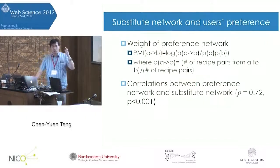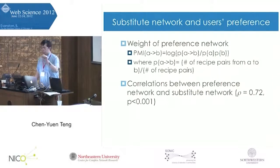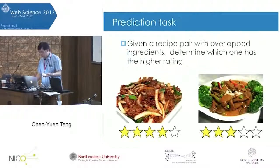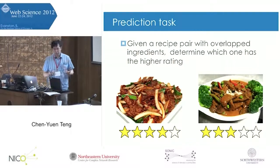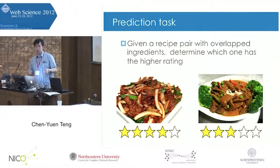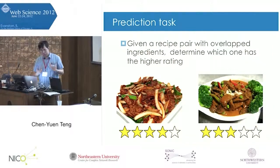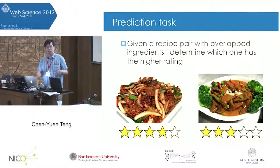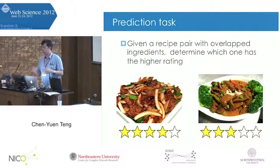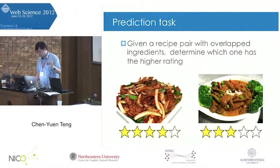After building the complement network and substitute network, we apply this information to a prediction task. Given two recipes, we want to predict whether one recipe's rating is higher than the other. We focus on recipes that share similar ingredients — for example, comparing Mongolian beef and curry beef — to ask which recipe users prefer.